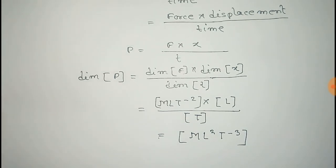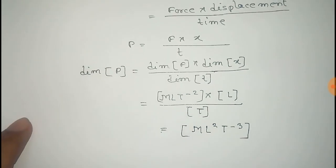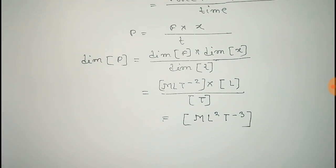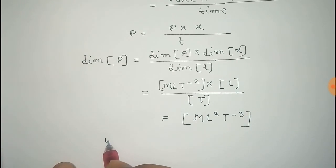Thus that is the dimension of power, that is ML square T to the power minus 3. Now the unit of power, that is SI unit, is Watt and that is given by 1 Joule per second.